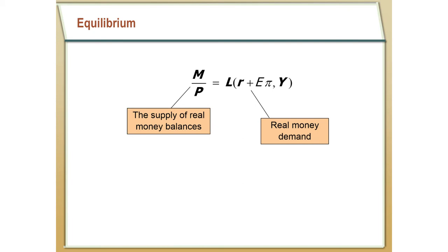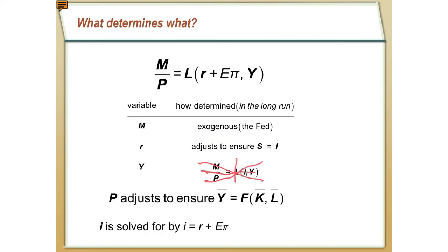It's useful to talk about each piece and think about where they are determined, to understand how one piece moves in response to something else changing. M stands for the money supply — this is an exogenous variable determined by the Federal Reserve according to their policies. When we talk about the short run later in the semester, we'll see how the Fed intentionally manipulates M to achieve short-run policy goals. The real interest rate is determined in the market for loanable funds — it adjusts to ensure supply of loanable funds equals demand, where S equals I.